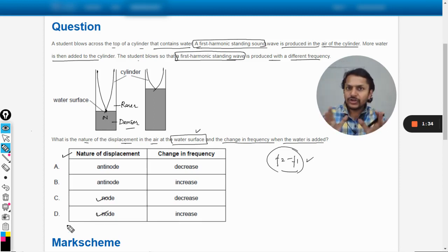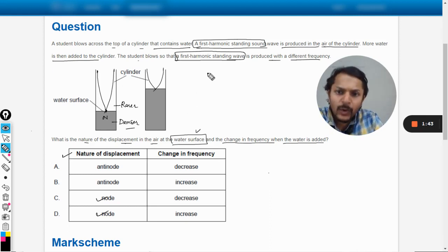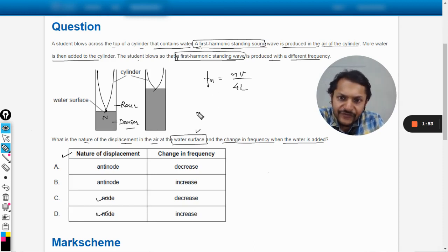Now let us talk about the frequencies. We are considering two pipes here in which one end is closed and another end is open. What is the general formula for the frequency in such cases? v divided by 4L. In the first case, the frequency f1 will be given by v divided by 4L.